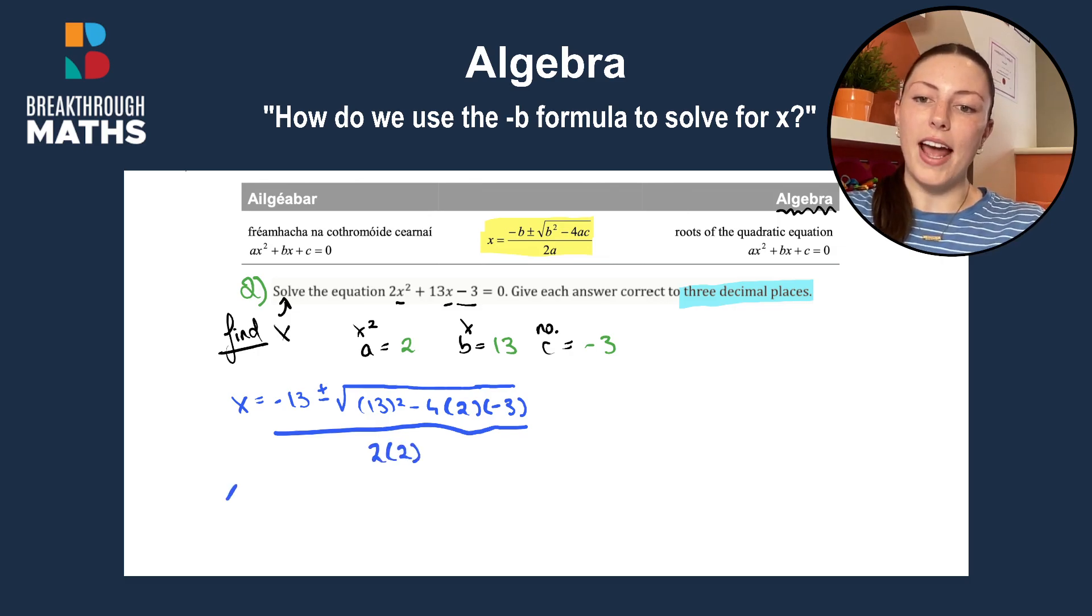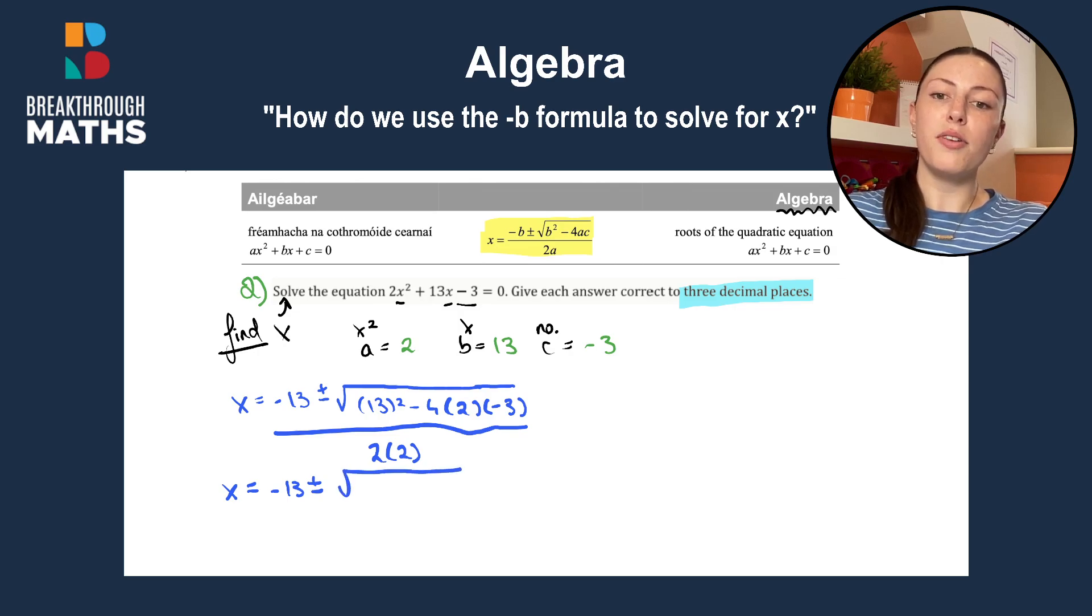So then we have x is going to be equal to minus 13, plus or minus, the square root of 13 squared is going to be 169. Then we have minus 4 by 2 by minus 3. And that gives us plus 24, all over 2 by 2 is 4.